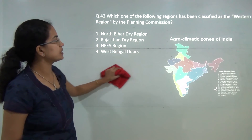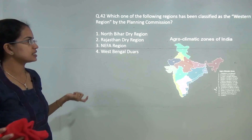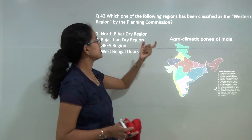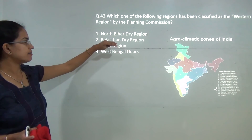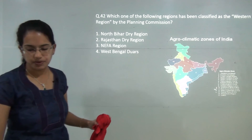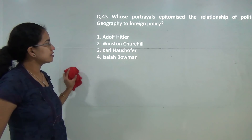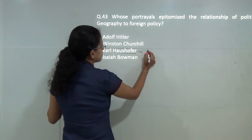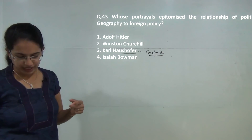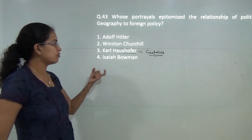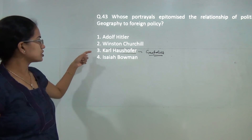Which of the following has been classified as a western dry region by the planning commission? Even without knowing the demarcations, by mere knowledge the western dry areas would be the Rajasthan dry areas located towards the west — so option 2 is the correct answer. Next, the relationship of political geography to foreign policy was laid down by Haushofer. He gave the term 'geopolitik' and under this concept tried to explain the Nazi foreign policy and how Lebensraum worked — so option 3 is correct.